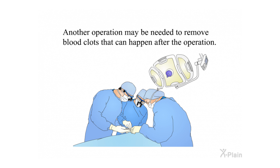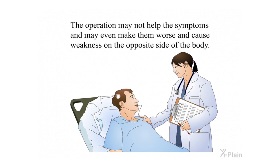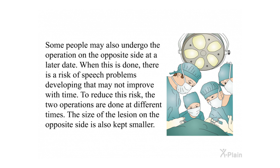Speech problems can occur with pallidotomy done on the dominant side of the brain, where the language center is located, though these are not frequent. Partial blindness can also happen. The operation may not help the symptoms and may even make them worse, causing weakness on the opposite side of the body. When a second operation is performed on the opposite side at a later date, there is a risk of speech problems that may not improve with time; to reduce this risk, the two operations are done at different times and the size of the lesion on the opposite side is kept smaller.